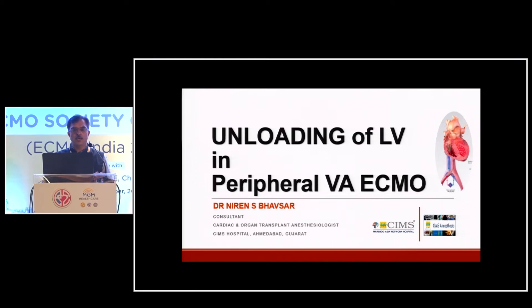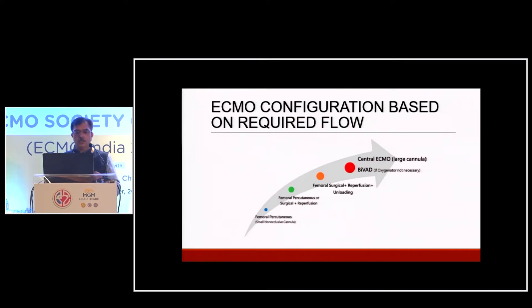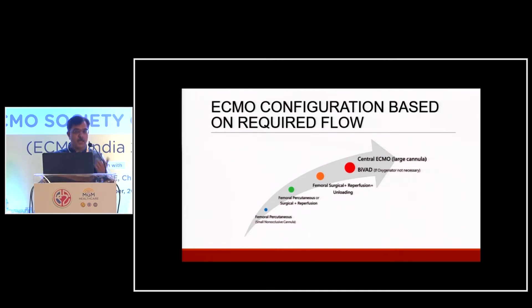From the previous talk it is established that VA ECMO has a role in cardiogenic shock. The configuration of ECMO ranges from central VA ECMO to peripheral VA ECMO. Central ECMO offers good peripheral flow, cardiac perfusion and unloading of both ventricles, but is complicated by bleeding and need for repeated sternotomies. Peripheral cannulation provides good flow but increases the loading condition of the left ventricle, leading to distension that jeopardizes recovery of the already failing ventricle.